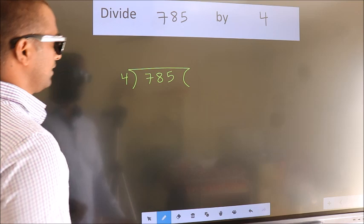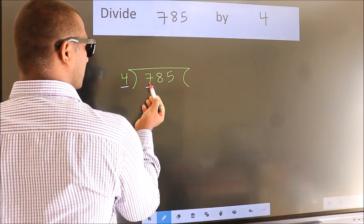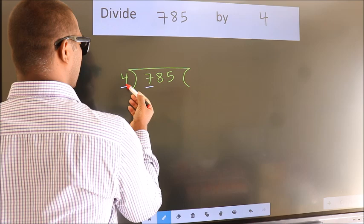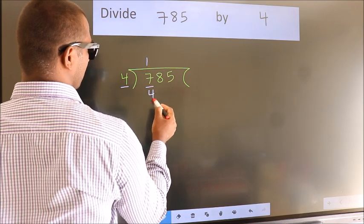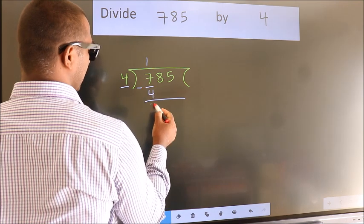Next. Here we have 7, here 4. A number close to 7 in 4 table is 4 once 4. Now, we should subtract. We get 3.